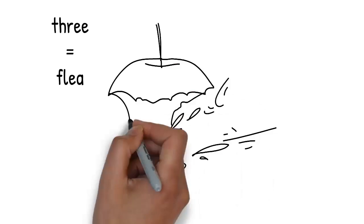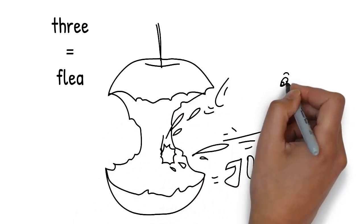From a hole in the middle of the core climbs a flea, which jumps away. Flea rhymes with 3.